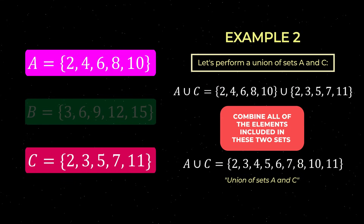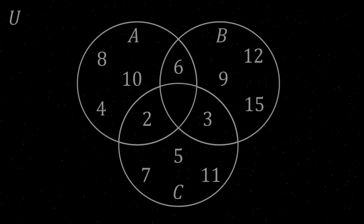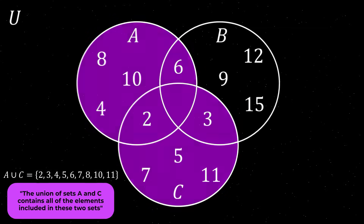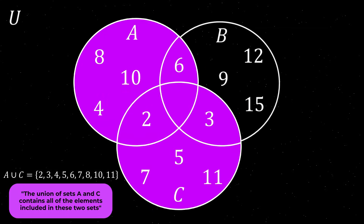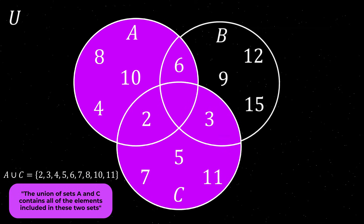Let's now illustrate this union of sets A and C on our Venn diagram. As you can see, the union of sets A and C is the area occupied by both of these sets.